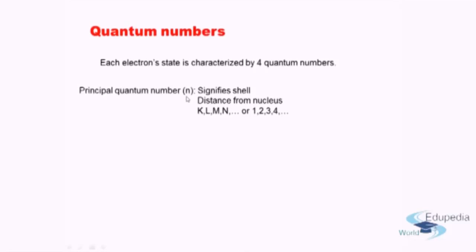The principal quantum number is the most important with respect to the energy of the electron. Higher the principal quantum number, higher the energy. There are other factors which define energy too, and those other quantum numbers will be discussed. But given no other information, the energy of an electron increases with increasing principal quantum number.